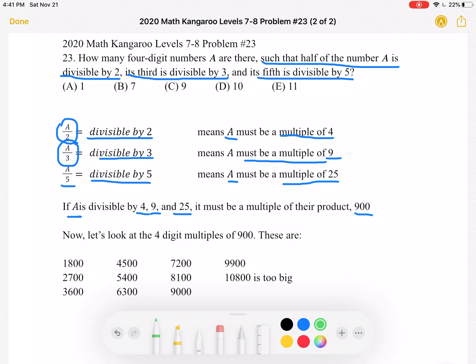We have 1,800, 2,700, 3,600, 4,500, 5,400, 6,300, 7,200, 8,100, 9,000, 9,900, and then we can see that the next multiple of 900, which is 10,800, is too big.